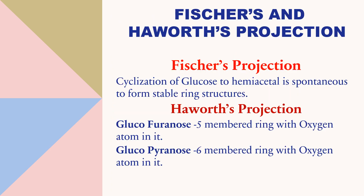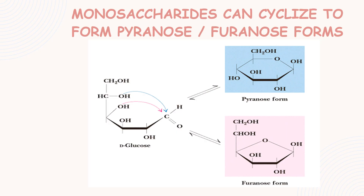Fischer's and Haworth's projection. Fischer's projection shows that cyclization of glucose to hemiacetal is spontaneous to form stable ring structures. In Haworth's projection, glucofuranose is a 5-membered ring with an oxygen atom in it, and glucopyranose is a 6-membered ring with an oxygen atom in it. Monosaccharides can cyclize to form furanose or pyranose form.